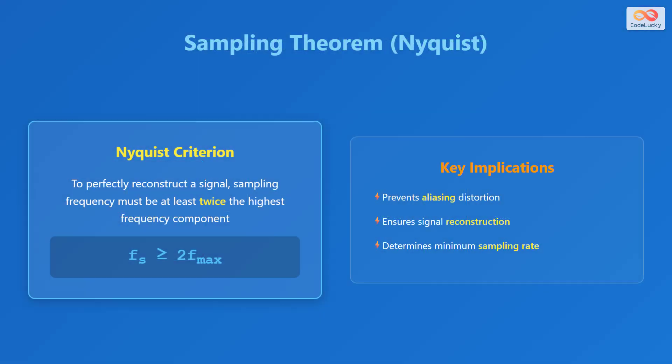The sampling theorem, also known as the Nyquist criterion, states that to perfectly reconstruct a signal, the sampling frequency must be at least twice the highest frequency component present in the original signal. Mathematically, this is represented as f_s ≥ 2 × f_max. Key implications include preventing aliasing distortion, ensuring accurate signal reconstruction, and determining the minimum required sampling rate.